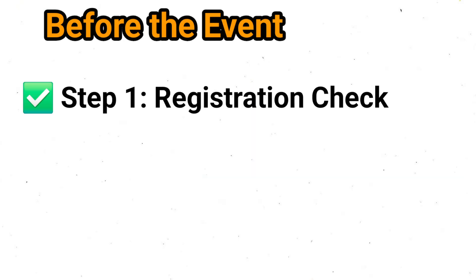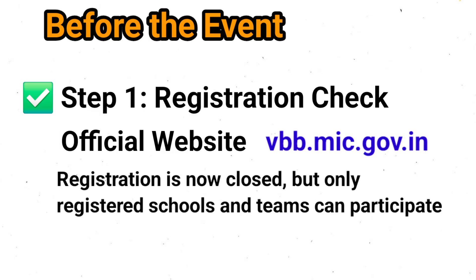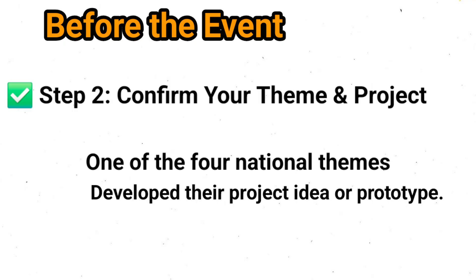Let's begin with what you must ensure before the big day. Step 1: Registration check. Make sure your school and team are registered on the official portal which is vbb.mic.gov.in. Registration is now closed but only registered schools and teams can participate. Step 2: Confirm your theme and project. Each team should have already selected one of the four national themes and developed their project idea or prototype. Double check that your idea aligns perfectly with your chosen theme.